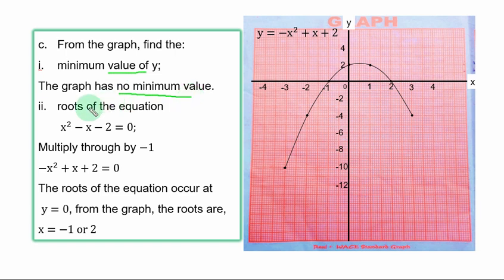Roman figure (ii), roots of the equation x squared minus x minus 2 equal to 0. The graph you plotted is this. You can only solve this equation using this graph if you can simplify this given equation to exactly this. To achieve that, multiply through by minus 1. The right hand side is 0. If you replace the left hand side with y, the roots of the equation occur at y equal to 0.